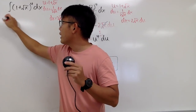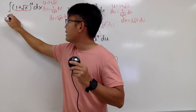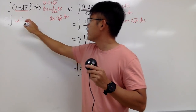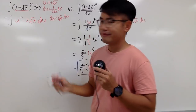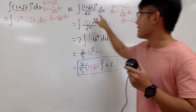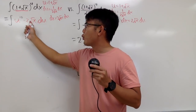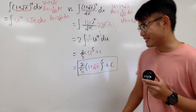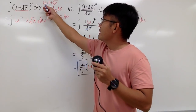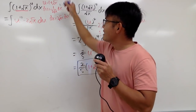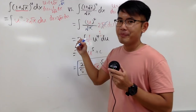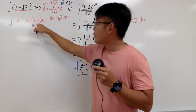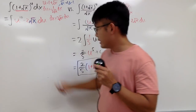This time, when we take the integral to the u world, the inside becomes u to the fourth power, and dx becomes 2 square root of x du. But in the u world, x is not allowed. However, from u equals 1 plus square root of x, subtracting 1 from both sides gives square root of x equals u minus 1. So I substitute u minus 1 in for square root of x.